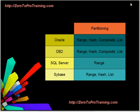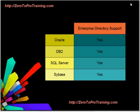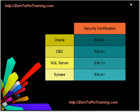This slide shows if native network encryption is supported. This slide shows if brute force protection is supported. Here is a comparison of enterprise directory support. Here is a comparison of password complexity support. Here is a comparison of audit support. This slide shows what kind of security is offered.